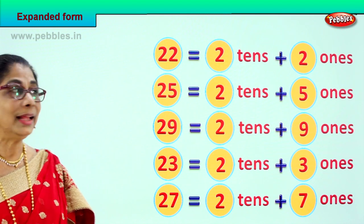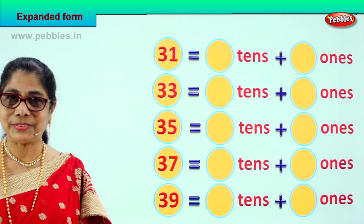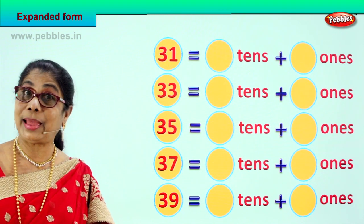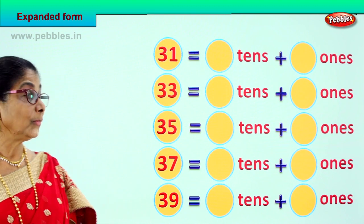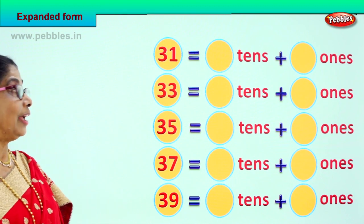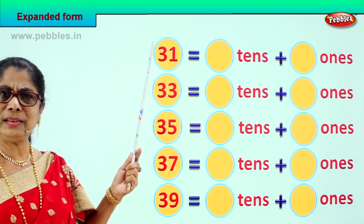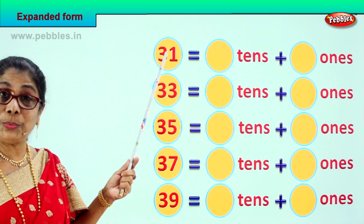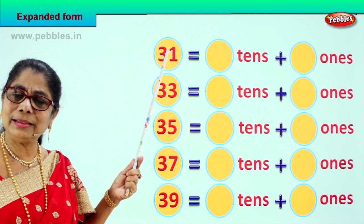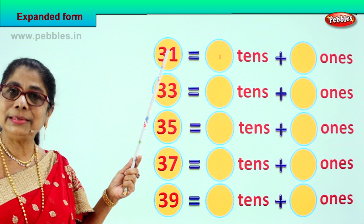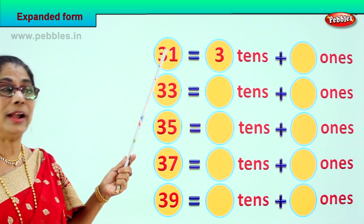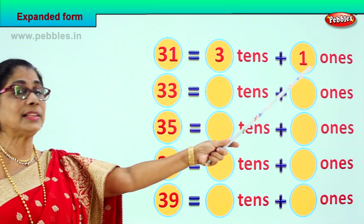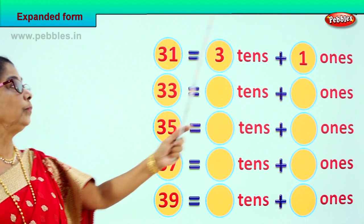Good! Let's take another set of sums and enjoy doing expanded form. Look what we have here — 31. What is the first number? 31. How many tens in 31? 3 tens. And 1 one. Very good. 3 tens plus 1 one.